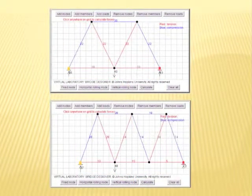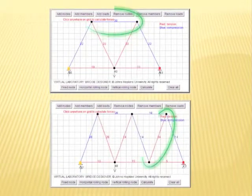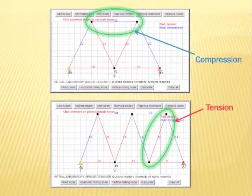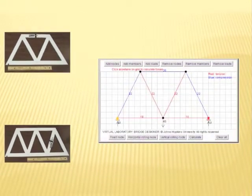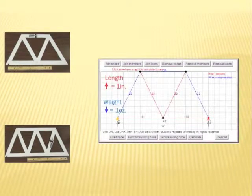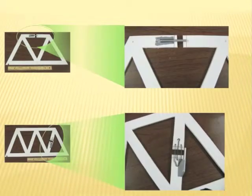After the software calculated the forces on the trusses, I decided to base my tests around these members because of their different force types. Then, I created model truss structures out of foam board. Since the software does not specify the units in load or in length, I decided to have each unit of length be 1 inch and each unit of weight be 1 ounce.